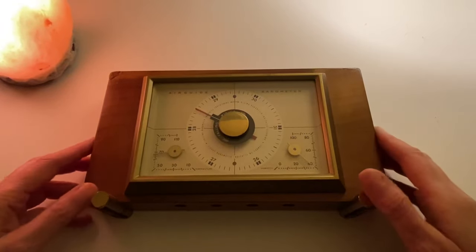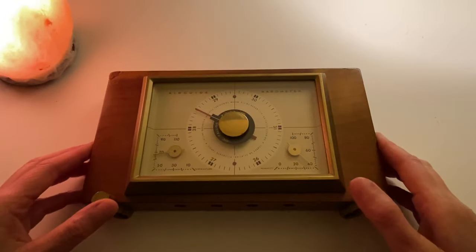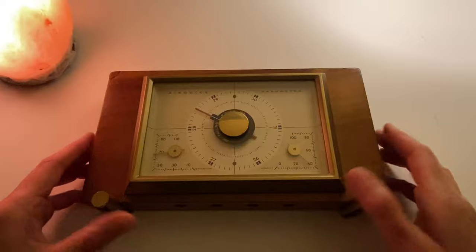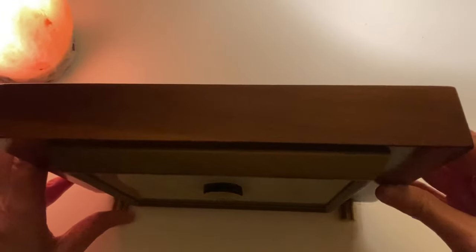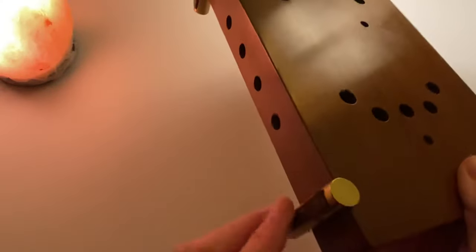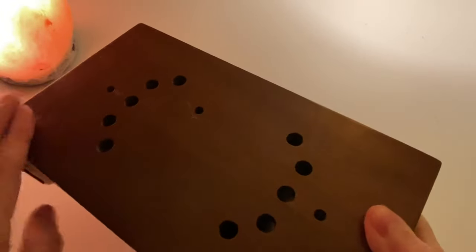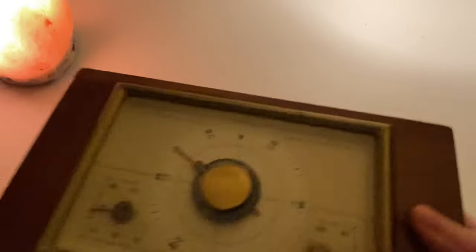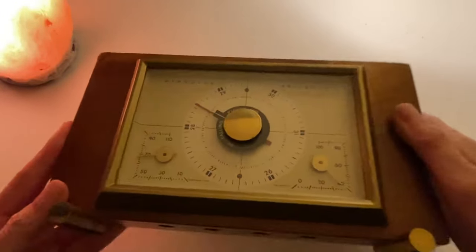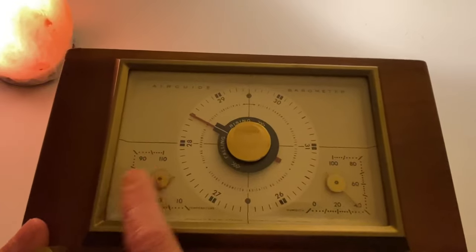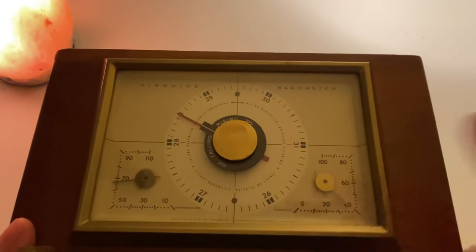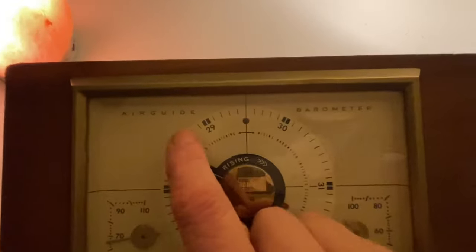Hey guys, I found something in my house I thought we could look at. This is probably a 1950s air guide barometer, and it sits like that. There are holes in the back and in the bottom that let the air get in there, let it feel the atmosphere. This barometer has a barometer, a temperature gauge, and a humidity gauge, and it's called air guide barometer.